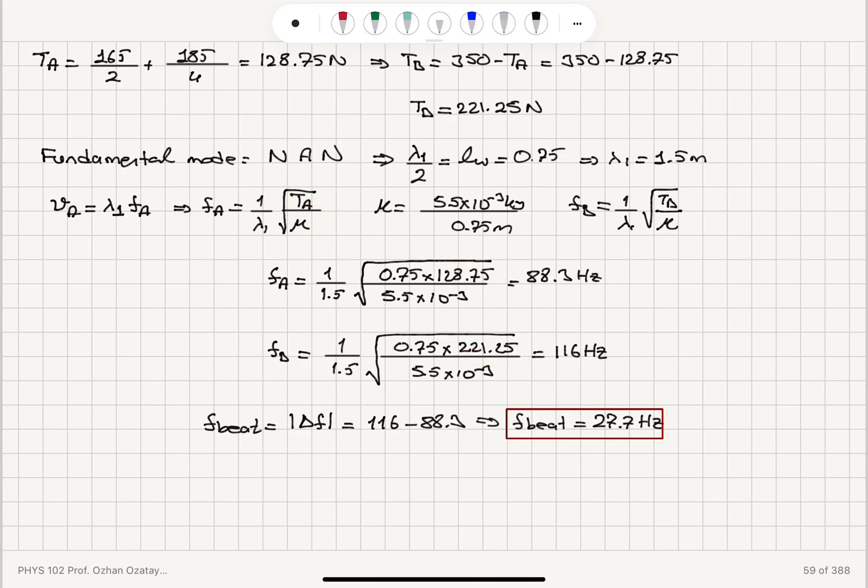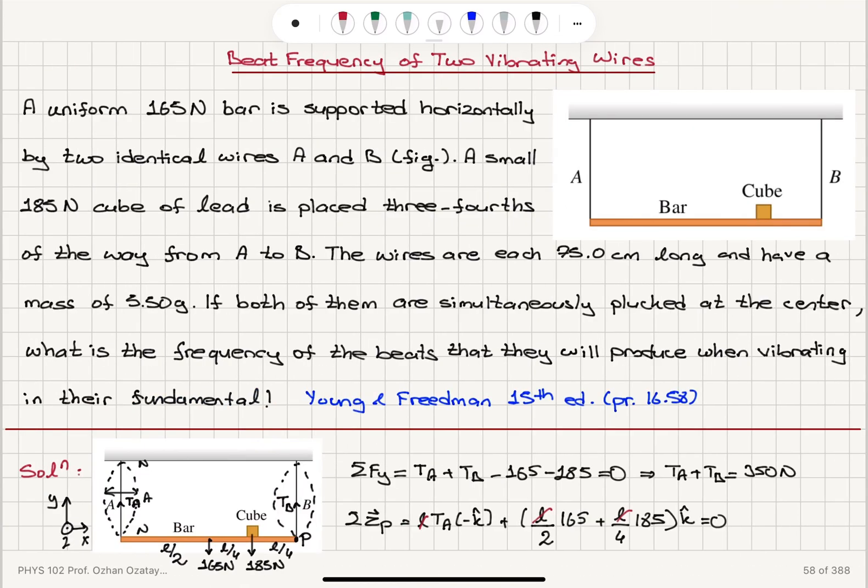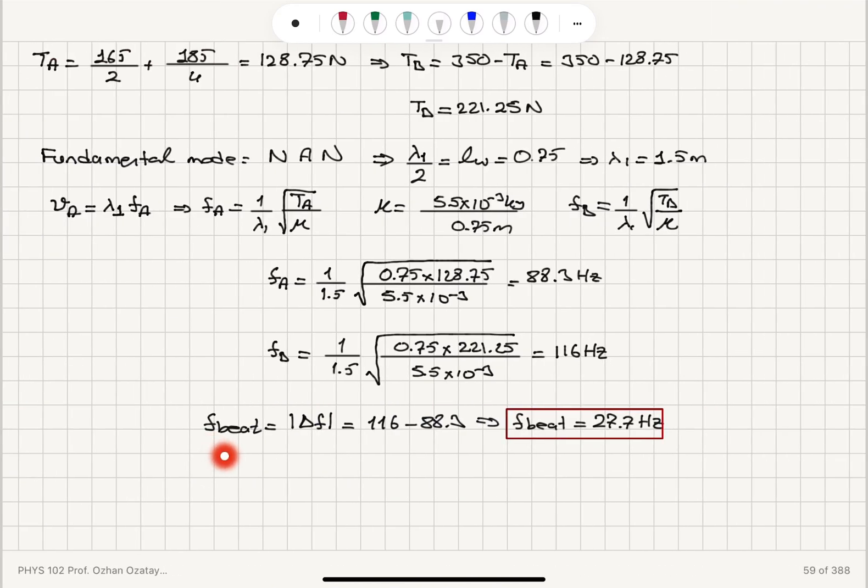So when we substitute these different tensions, we see that one is vibrating at 88.3 Hertz, the other one 116 Hertz. Since they're vibrating together at the same time, they will produce a beat frequency of delta F, which is 27.7 Hertz.